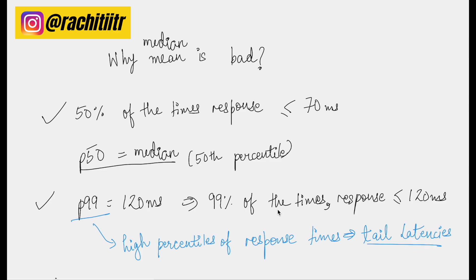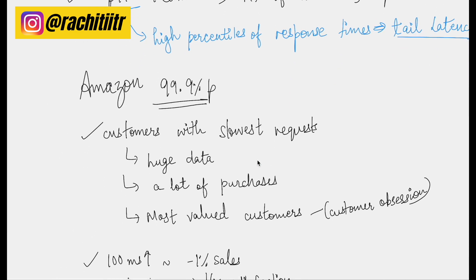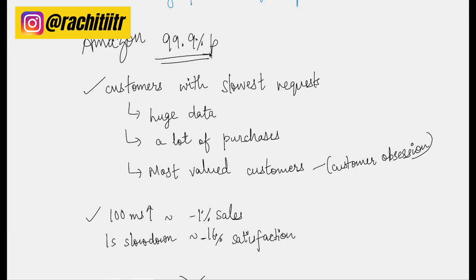Higher percentiles of response times are generally denoted as tail latencies, and at much higher percentiles the response time can be quite high. Amazon focuses on the 99.9th percentile. Why? Because Amazon has found that customers with the slowest requests often have huge amounts of data — and they have that data because they have made a lot of purchases, making them the most valued customers. When data scientists look at this data, they conclude that since customer obsession is a core value and many valuable customers are facing slow response times, the company should focus on keeping that 99.9th percentile really small.